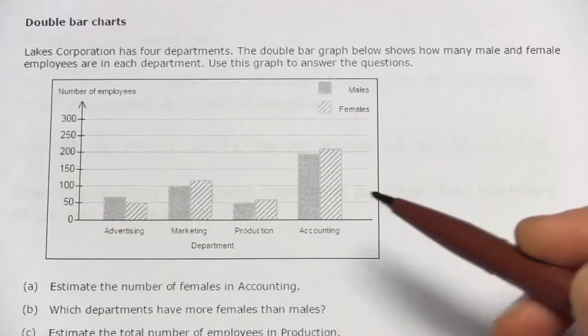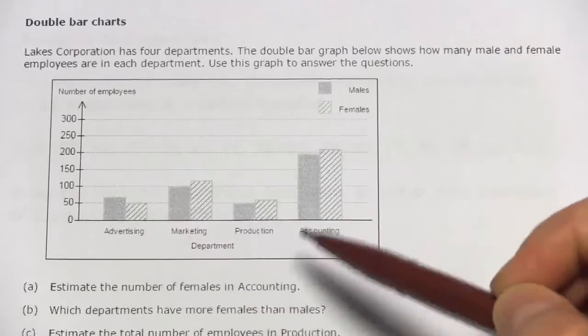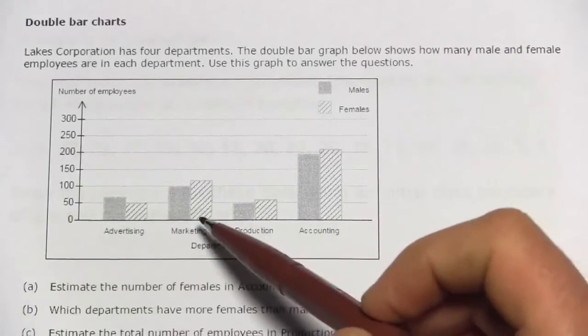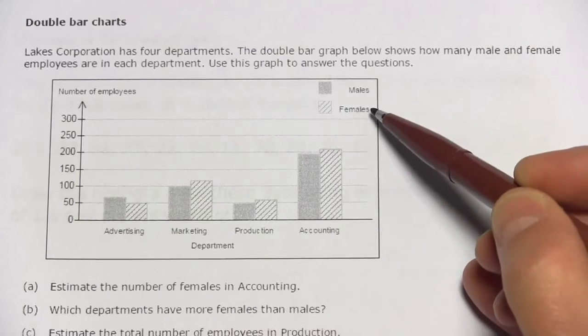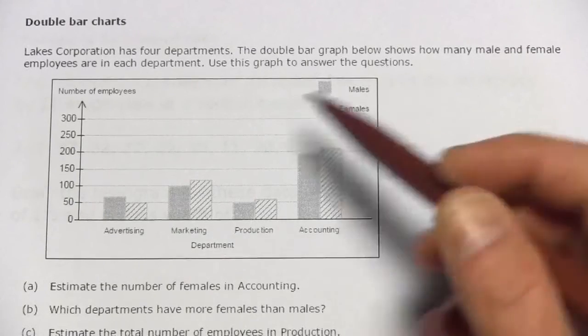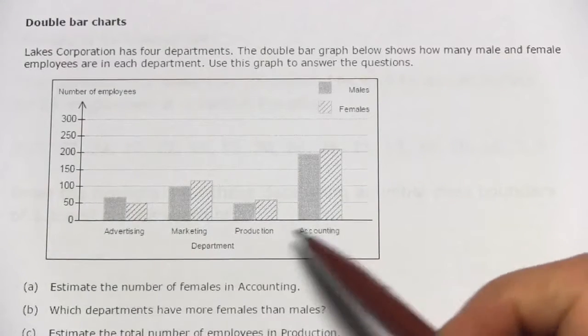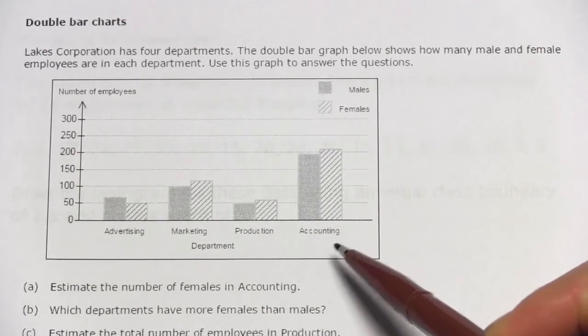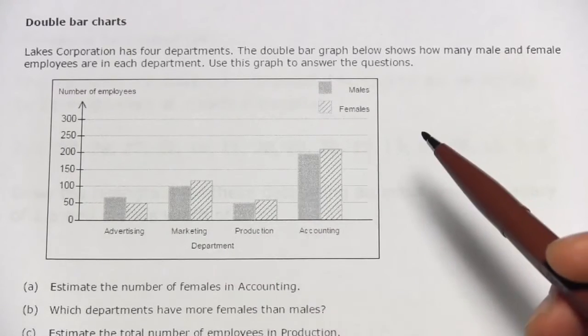In this problem, we're working with a double bar chart. That's when you have a typical bar graph, but they split each section into two different categories. In this case, they've got males and females, showing the number of employees in each of the different departments in a business broken down by males and females. This might be useful if you want to track which departments have more males or more females.